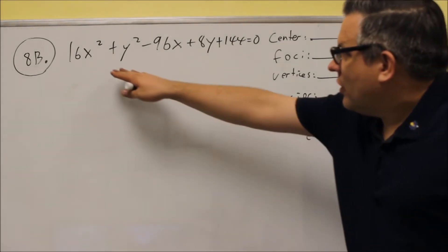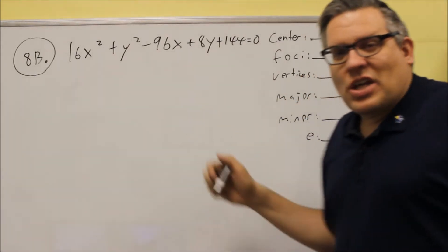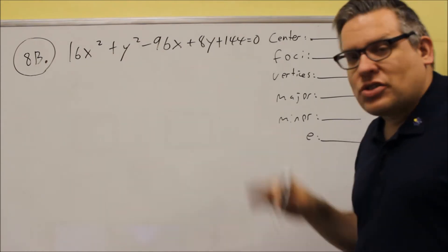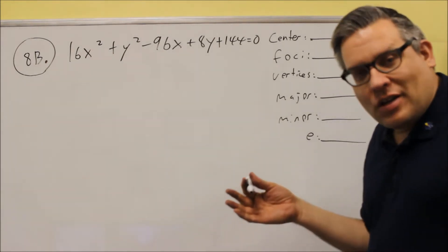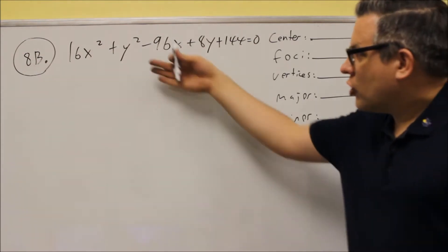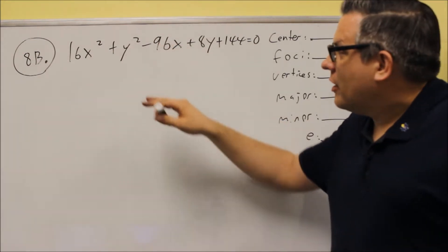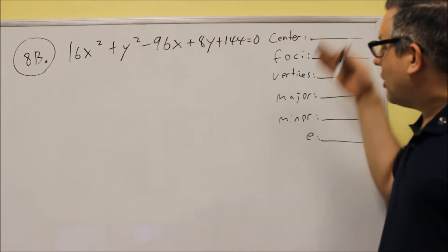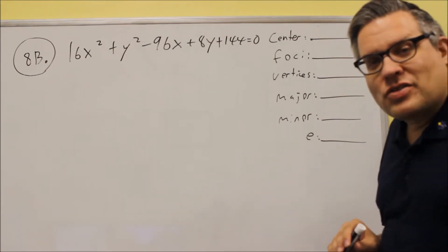Okay, for 8B we have something where it's not in the same form. We can't just look at it and tell immediately what our AB is. This is one that requires completing the square. So first we need to walk through this one and complete the square first, then we can find all this information that's asking.